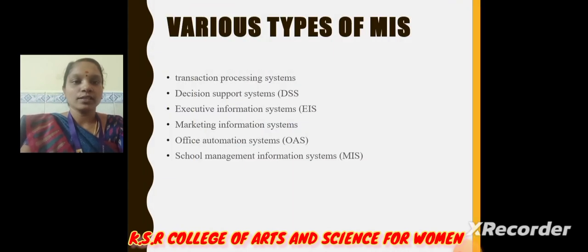Next, various types of MIS: Transaction processing system, decision support system, executive information system, marketing information system, office automation system, and school management information system.